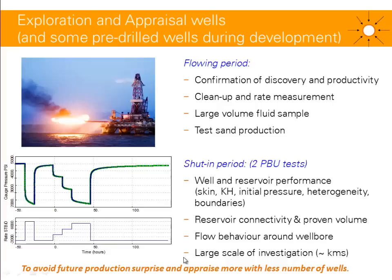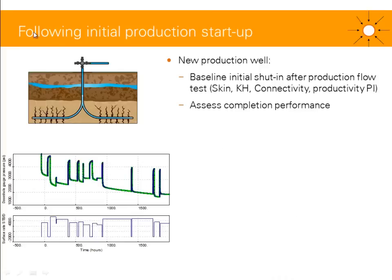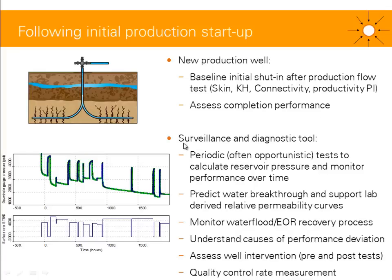During production, for a new well following initial startup, you need a production flow test measurement and then a baseline initial shut-in, giving you initial performance data: skin, permeability, connectivity, and productivity index. It's best to do this in the first to second week of startup. You can also assess completion performance and discuss it in a post-well review.